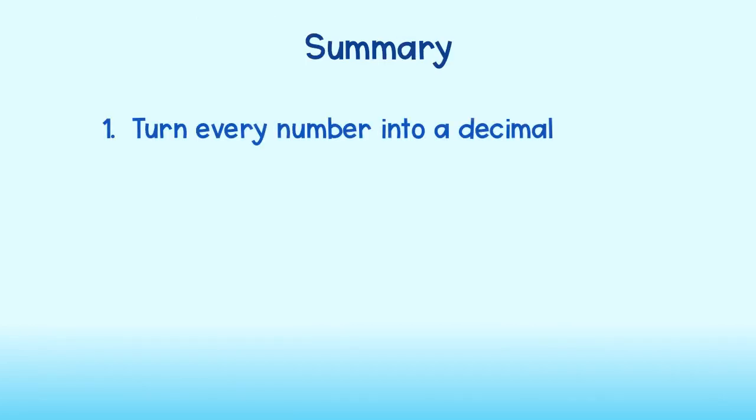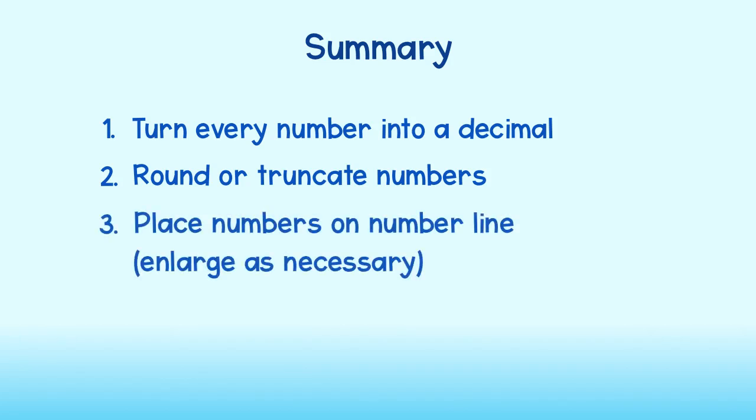Let's take one final look at the strategy we use to order real numbers. First, we turn every number into a decimal. Then, we round or truncate the numbers. Third, we place the numbers on a number line and enlarge the number line as necessary.